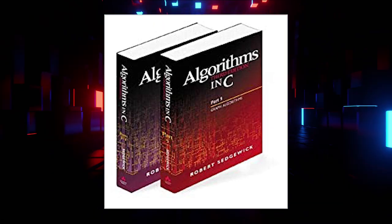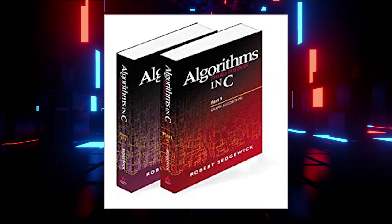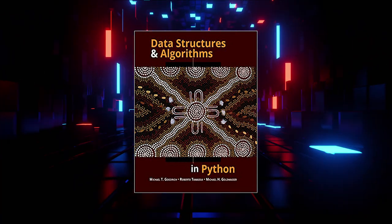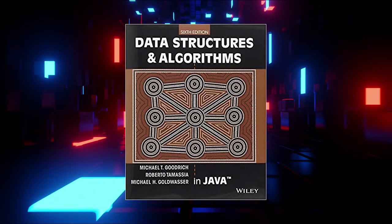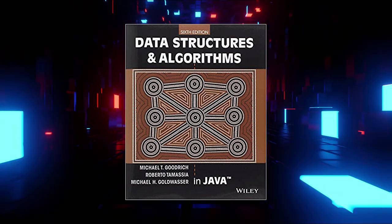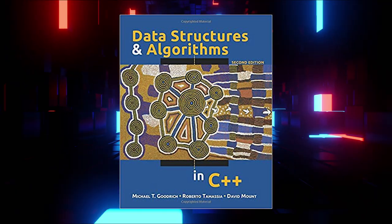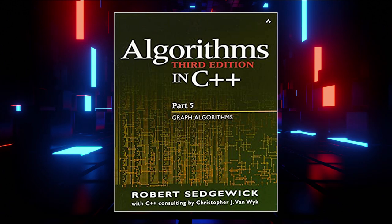Before rolling into individual topics, you should build a foundation in computer science. Some books I'd recommend: for C, Algorithms in C by Robert Sedgwick; for Python, Data Structures and Algorithms in Python by Goodrich; for Java, Data Structures and Algorithms in Java by Goodrich; for C++, Data Structures and Algorithms in C++ by Goodrich or Algorithms in C++ by Sedgwick. Links to all these books are in the video description.